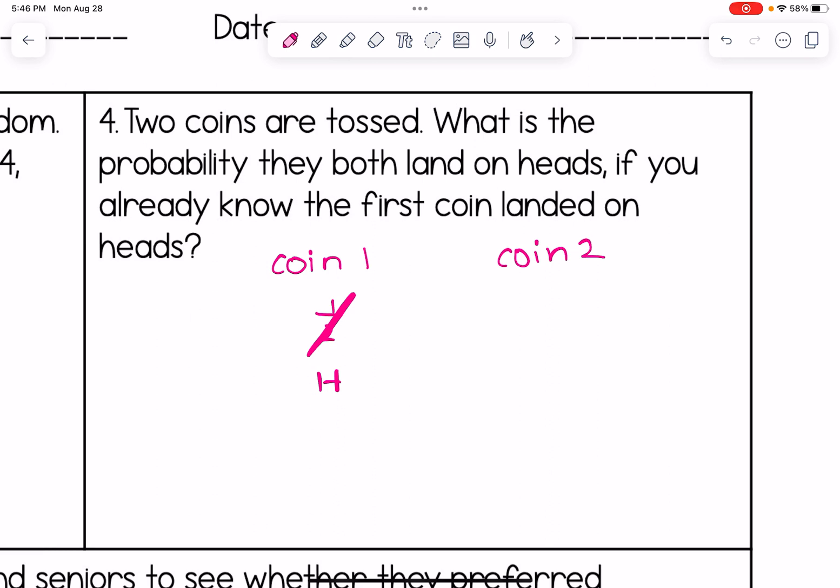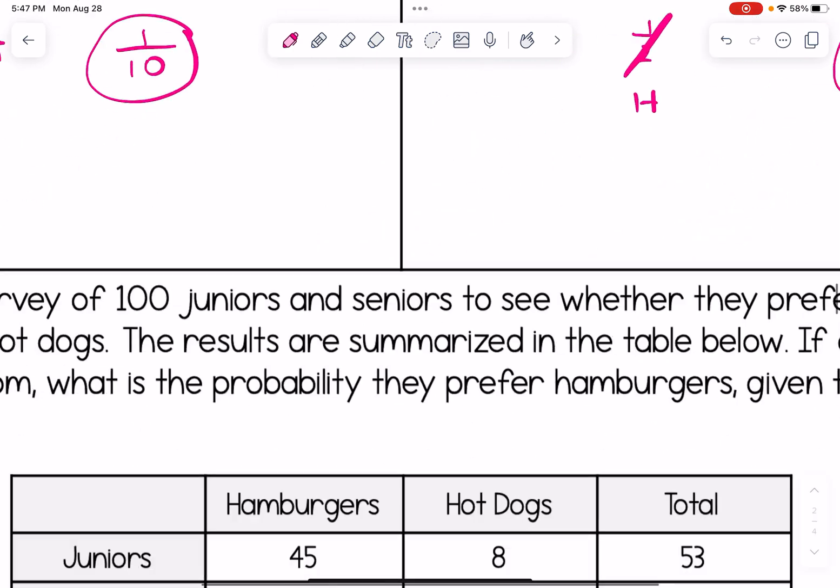Is coin two impacted by the flip of coin one? No. The result of coin one is not impacting coin two at all. That's why these events are considered to be independent. So the probability of getting heads is just 1/2. And really, this whole coin one information here is just extra information. We're really just looking for what's the probability a coin lands on heads.